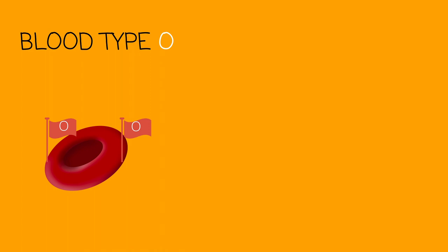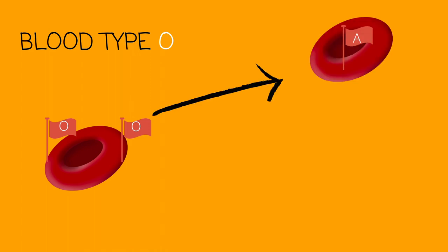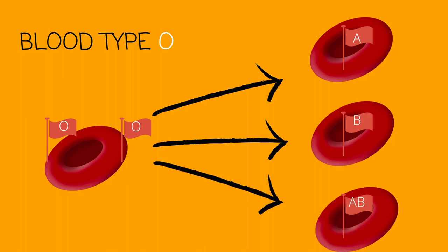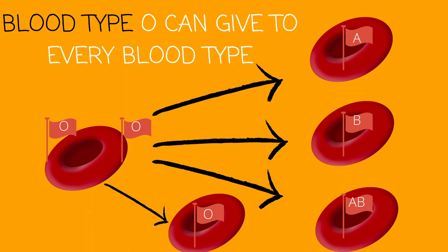Lastly, we're working with blood type O. O can give to everyone: O can give to A, O can give to B, O can give to AB, and O can give to O. It can give to everyone because it represents no one — it has no flags or antigens that will trigger other blood types to see it as a threat. Blood type O is known as the universal donor.